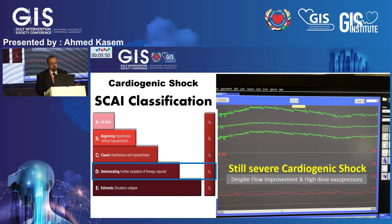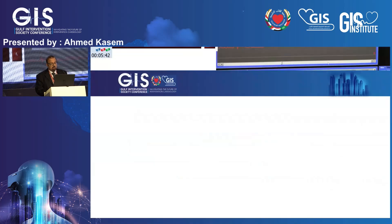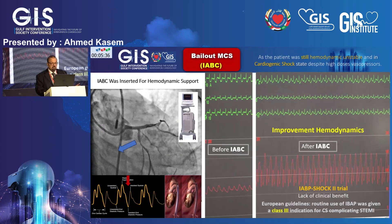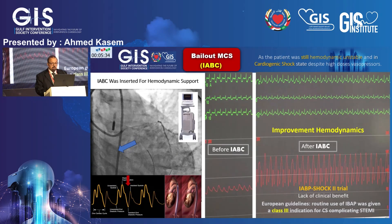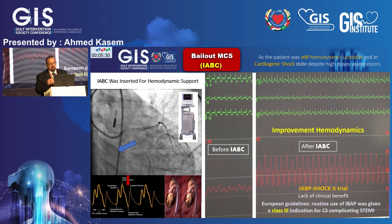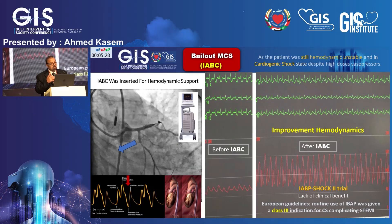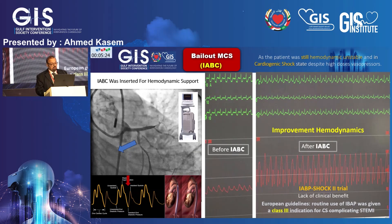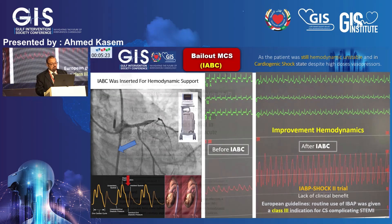Despite improvement of the flow, the patient remained in severe shock with blood pressure markedly low at 55 mmHg on maximum doses of vasopressors. We don't have Impella in our cath lab, so I decided to insert an intra-aortic balloon pump. The pressure built up significantly to 150 mmHg, and I was able to start weaning the vasopressors after IABP insertion.